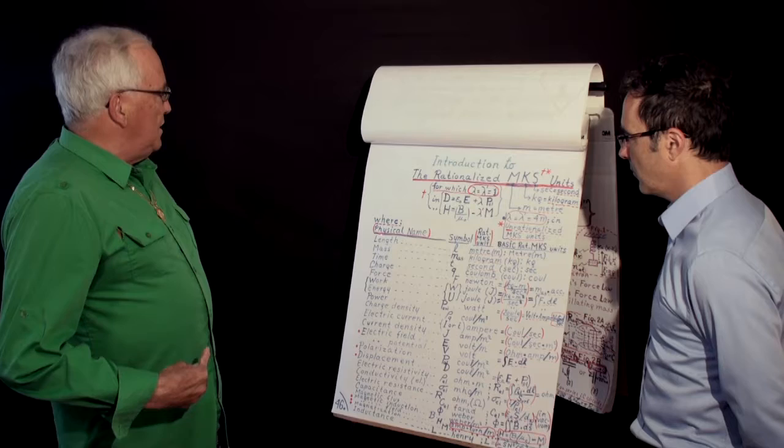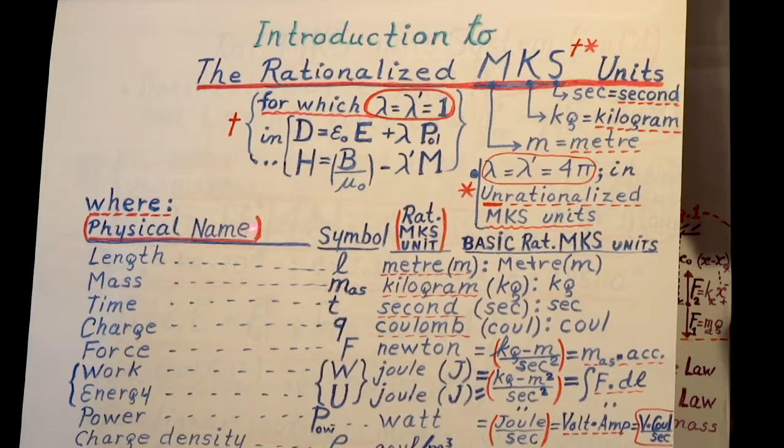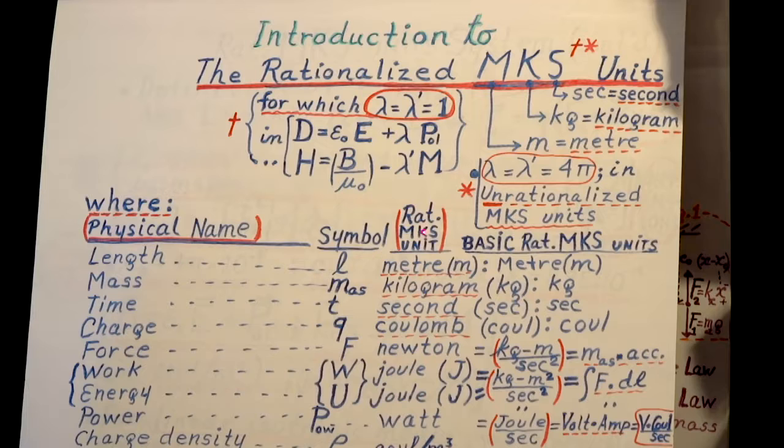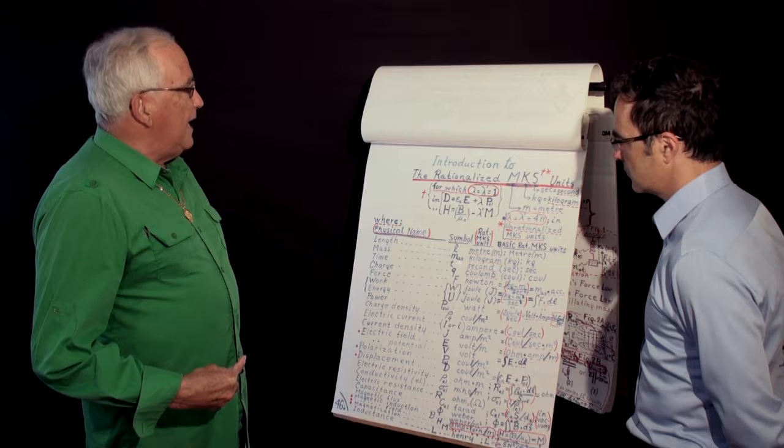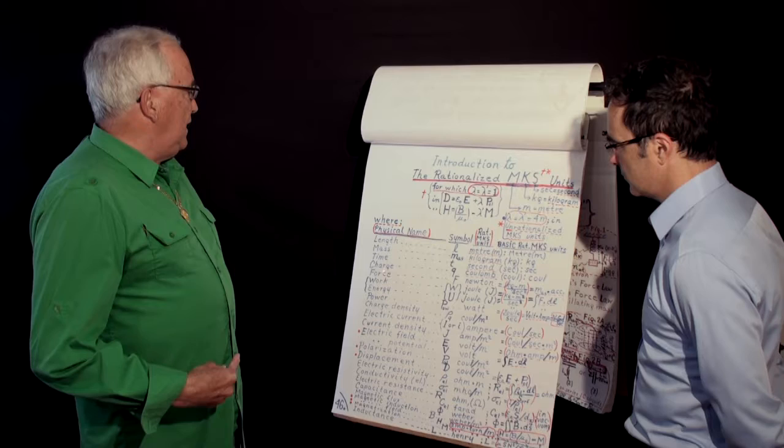This is the physical name of the unit, the symbol when we talk about unit, Rationalized MKS Unit and here, Basic Rationalized MKS Unit. For example, length when we place an equation just in terms of symbol, length is symbolized by L, mass by M usually, but I added AS for mass because M can be other things. And I like AS for atomic spring because I talk a lot about atomic spring.